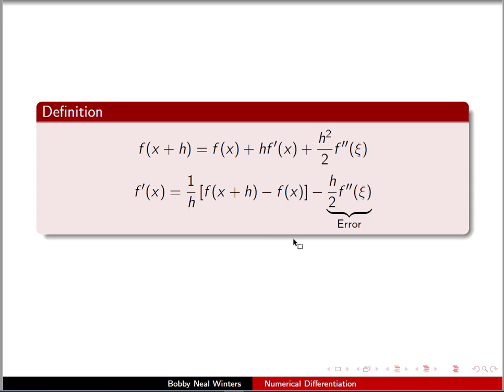So I'm going to start with a definition. We're going to be trying to calculate or estimate the derivative. Well, how are we going to go about it? Start off here with our Taylor series. We're just going to take it out to basically a linear approximation with a quadratic error term. And solve this for f prime of x. And when we do this, we get 1 over h times f(x+h) minus f(x). And our error term is going to be the second derivative at some point times h over 2.